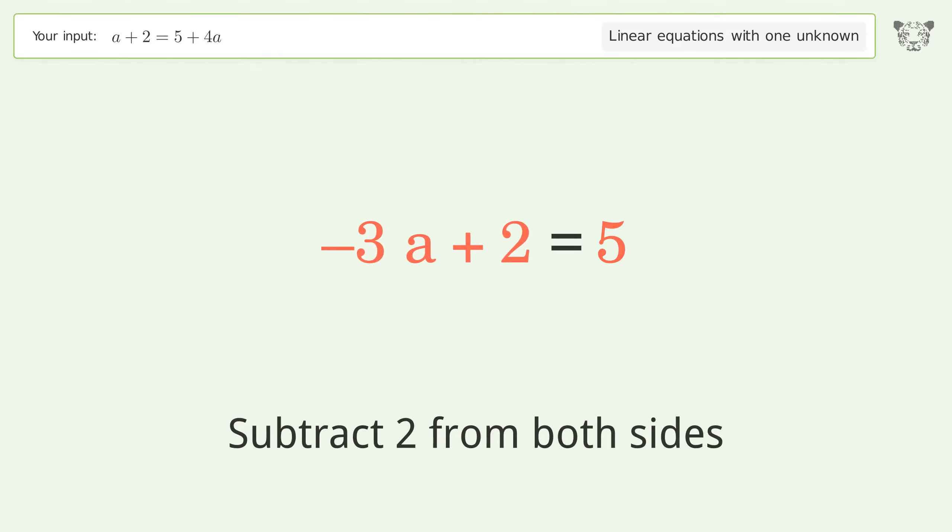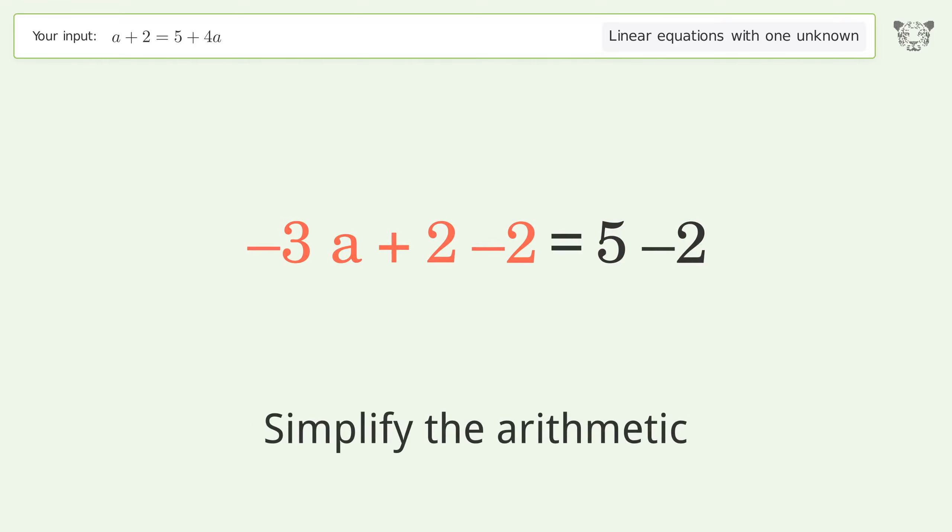Group all constants on the right side of the equation. Subtract 2 from both sides. Simplify the arithmetic.